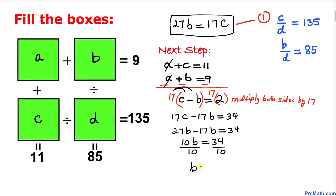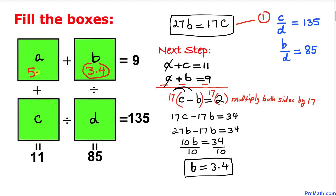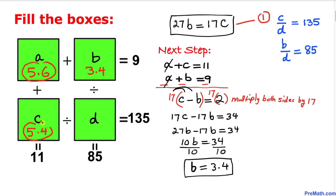On the left-hand side we have 10b equal to 34. Dividing both sides by 10, b equals 3.4. Since a plus b equals 9, a equals 5.6. And since a plus c equals 11, c equals 5.4.